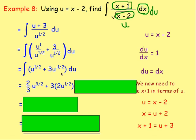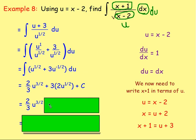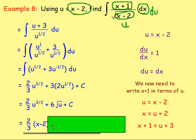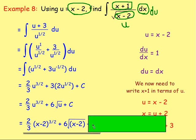We've got 2 thirds u to the power of 3 over 2 and 3 times 2 gives 6. Because it's u to the half, that means the square root, so 6 times root u, plus c. From there we have our answer in terms of u, but we want it in terms of x. We know u is equal to x take away 2, so we swap: 2 thirds of x take away 2 to the power of 3 over 2, plus 6 times the square root of x take away 2, plus c. That's how you would do that one.